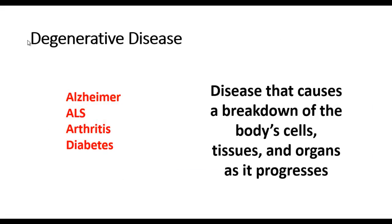A degenerative disease is one in which the cells, tissues, or organs of a body begin to break down over time. Alzheimer's is a really good example of this, because different parts of one's brain begin to shut down or degenerate — causing issues with memory and other functions. Arthritis is another good example, where the cartilage between one's joints begins to deteriorate, causing bone-on-bone occurrence and pain.